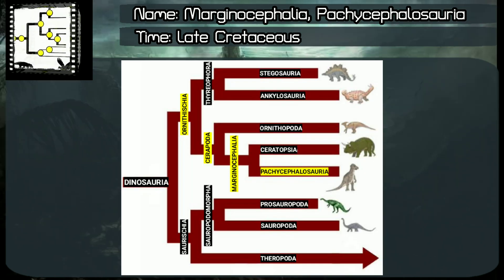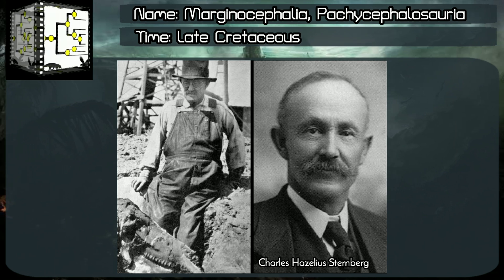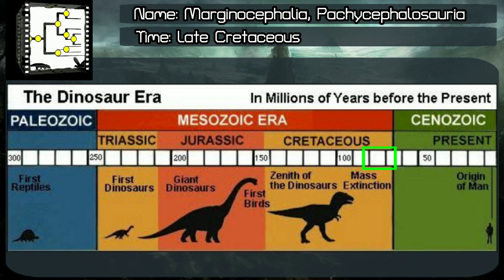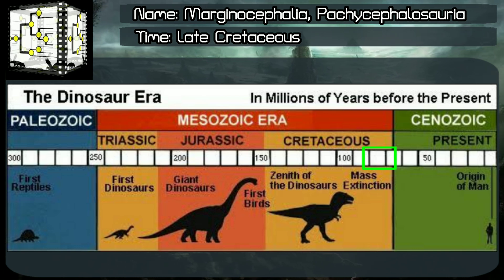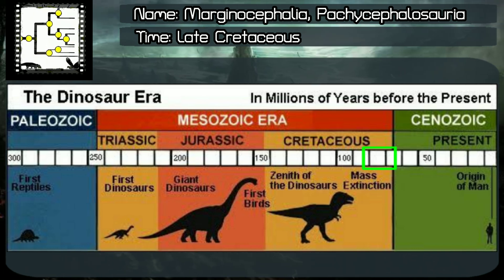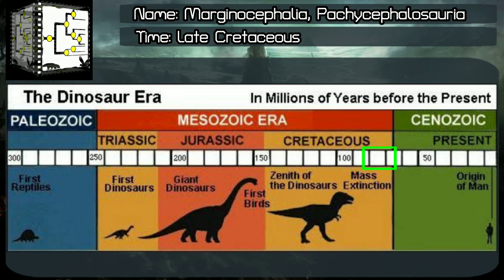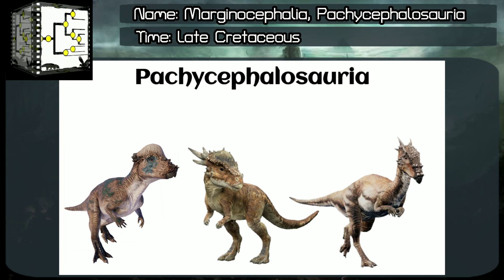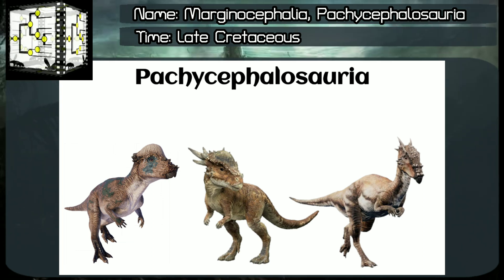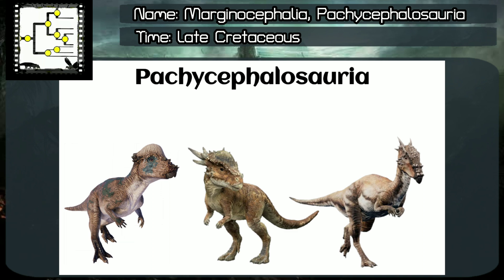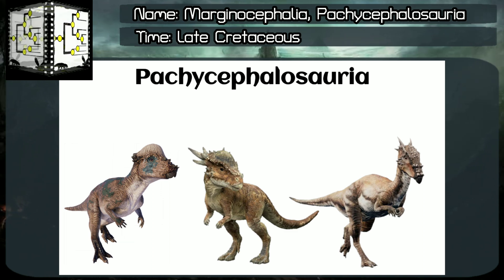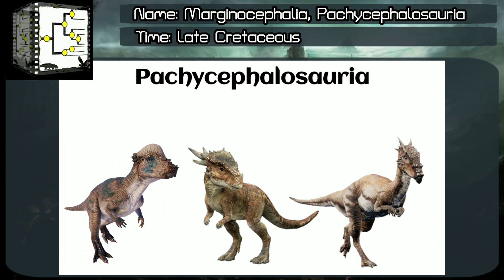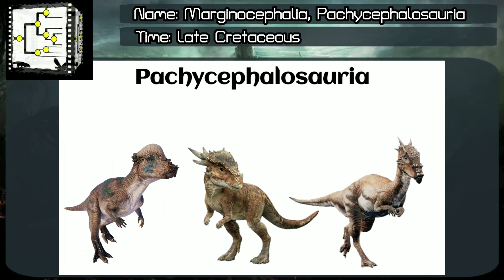Pachycephalosauria suborder, classified by Charles Hazelius Sternberg, year 1945. Time range: Phanerozoic Aeon, Mesozoic Era, late Cretaceous period, something around 91 to 66 million years ago. From Greek, Pachycephalosauria means thick-headed lizards. They are bipedal herbivores with very thick ossified skulls. Skulls can be domed, flat, or wedge-shaped, depending on the species. The skulls were often surrounded by nodes or spikes, or both.